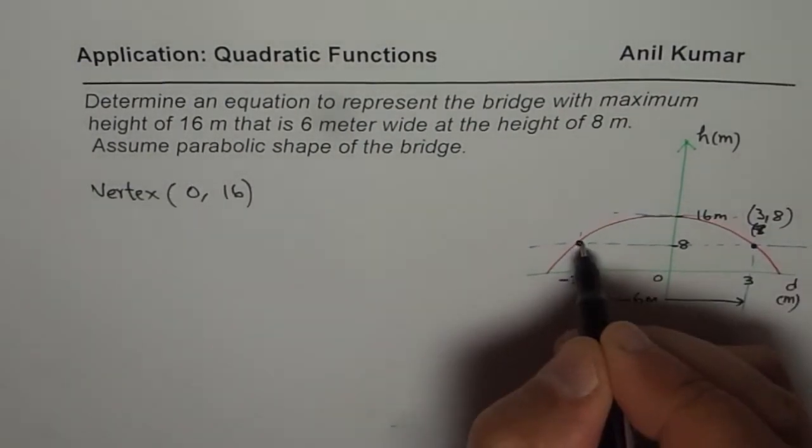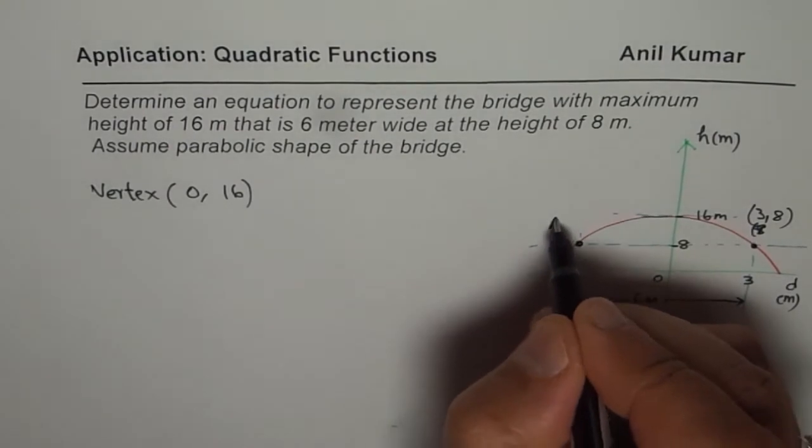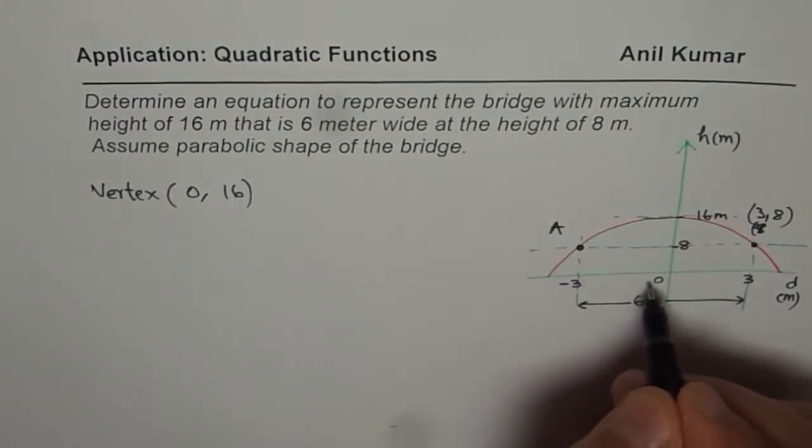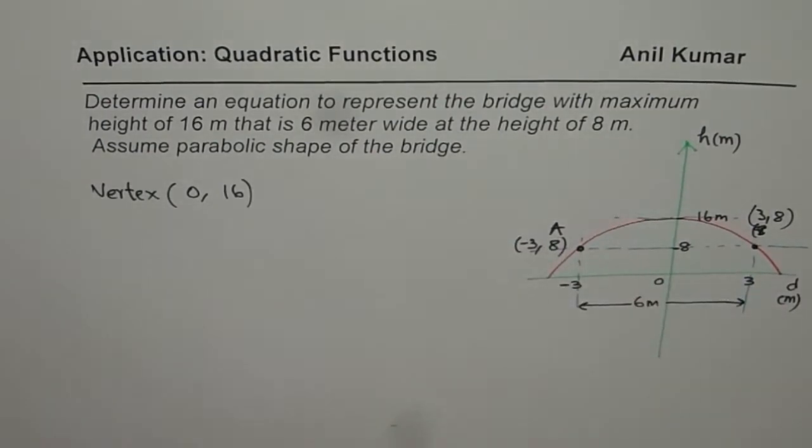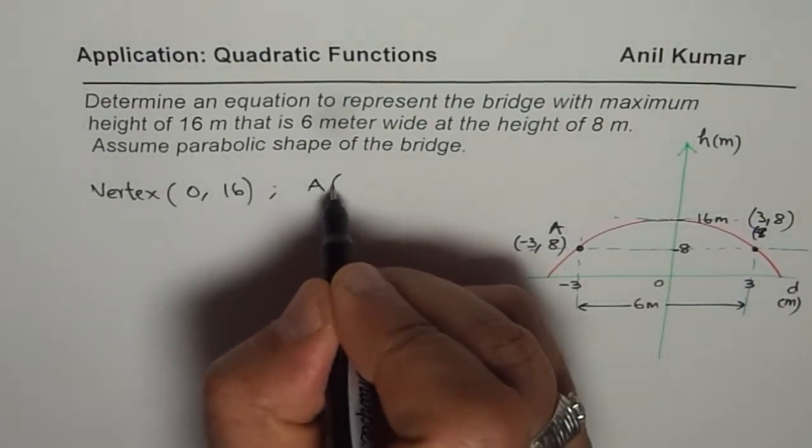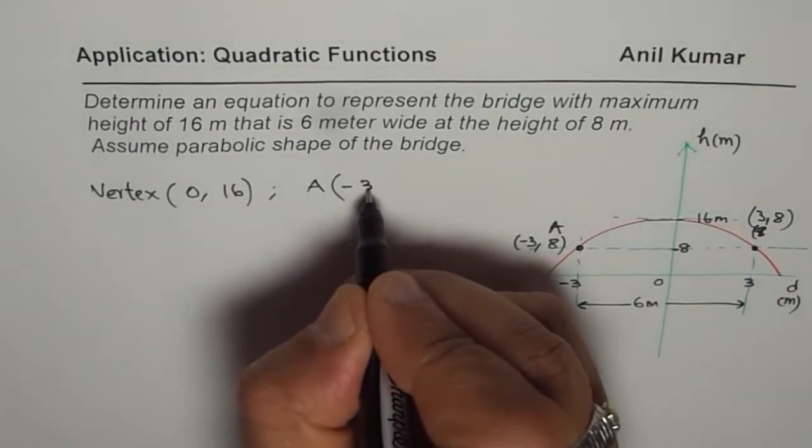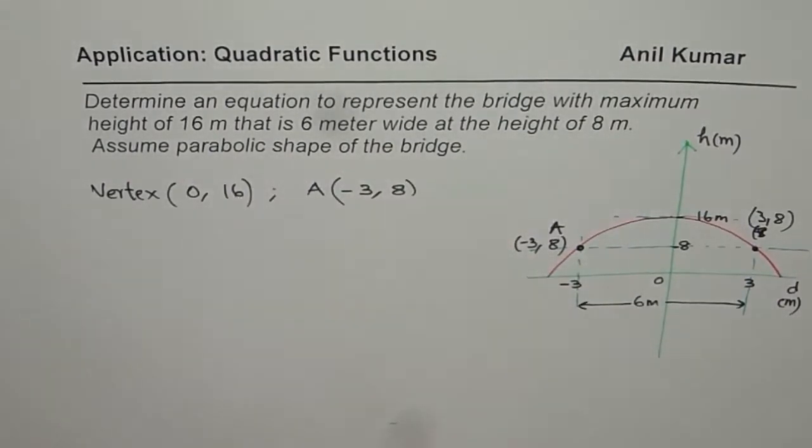So this point is at minus 3, 8. So that is the point which we have taken. So we are considering the point A on the bridge whose coordinates are minus 3 and 8.